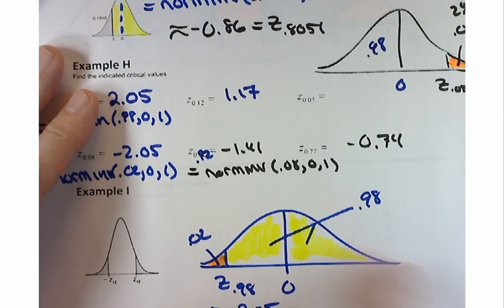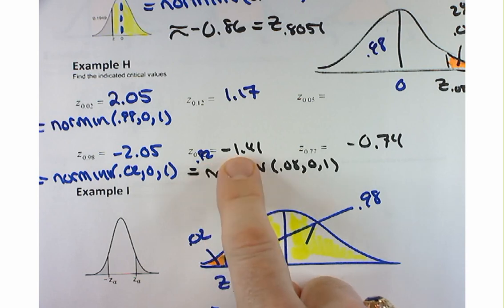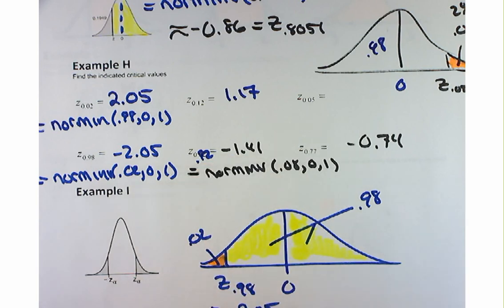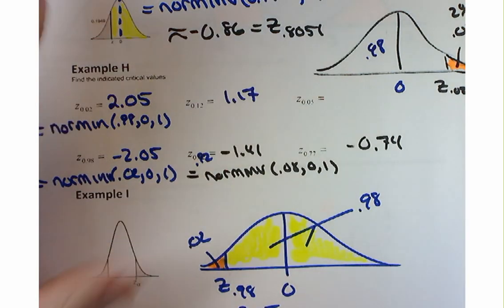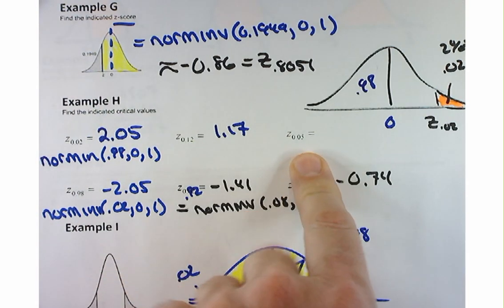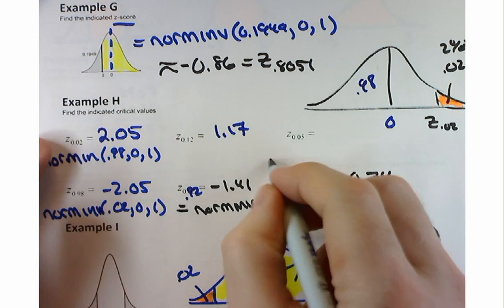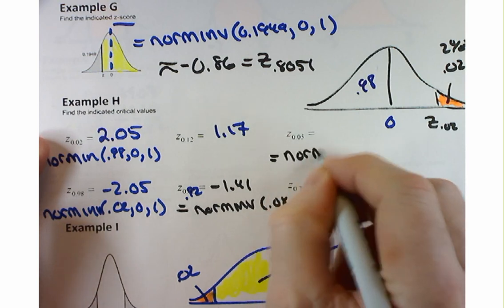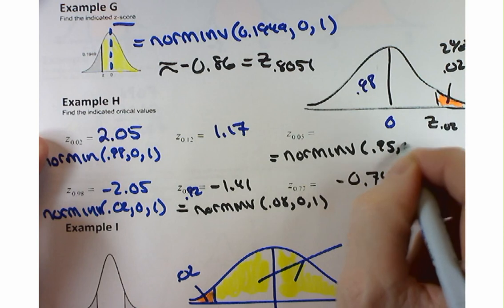The quick fix is to say: I forgot to use the complement. For Z sub 0.05, you'd need to do norm inverse of 0.95, 0, 1 — and that gives about 1.64 or 1.65.